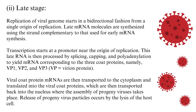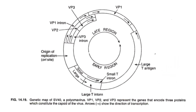During the late stage, replication of the viral genome proceeds in a bidirectional fashion from a single origin of replication. Late mRNA molecules are synthesized using the strand complementary to that used for early mRNA synthesis. Transcription starts at a promoter near the origin of replication. This late RNA is then processed by splicing, capping, and polyadenylation to yield mRNAs corresponding to the three coat proteins — VP1, VP2, and VP3. These viral coat protein mRNAs are transported to the cytoplasm, translated into coat proteins, and then transported back into the nucleus where assembly of progeny viruses takes place. Release of progeny virus particles occurs by lysis of the host cell.